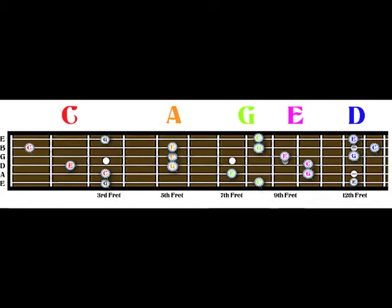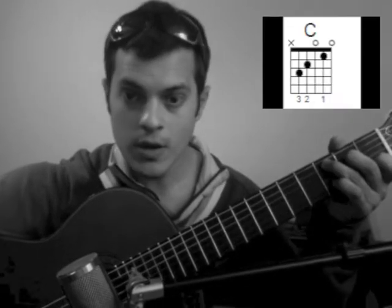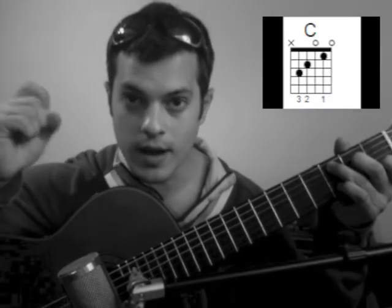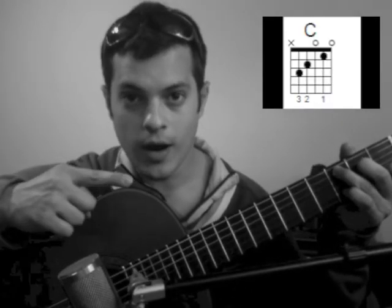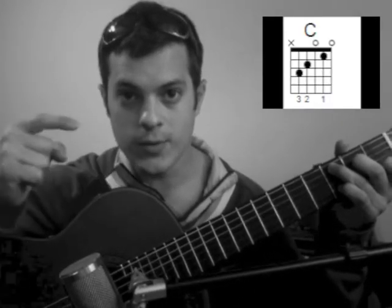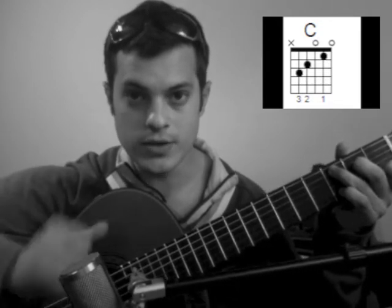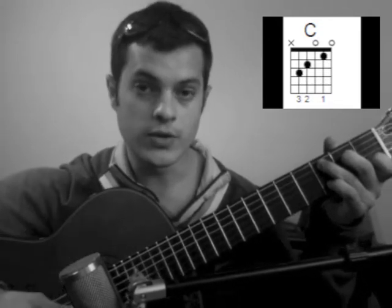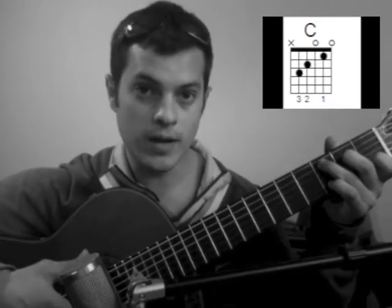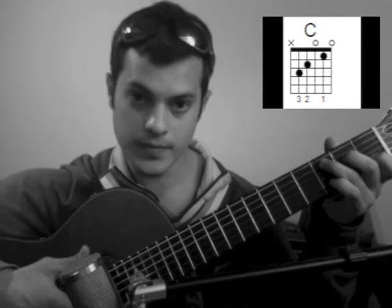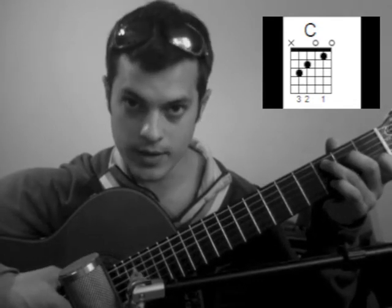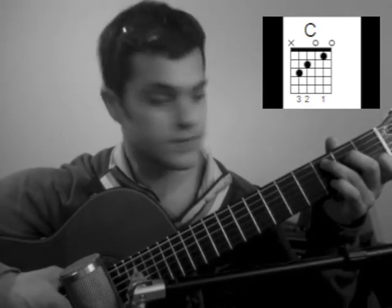So the first one we're going to start off with today is the C. So when we play a C chord, we have a pentatonic scale that correlates with this pattern. And so that's what I'm going to show you — this pattern for the C pattern looks like this.